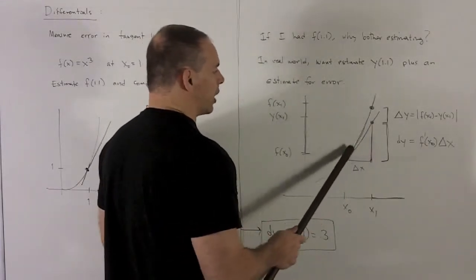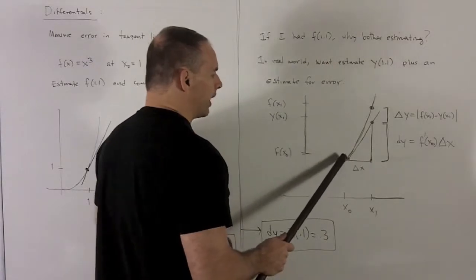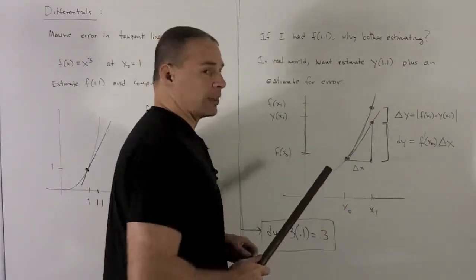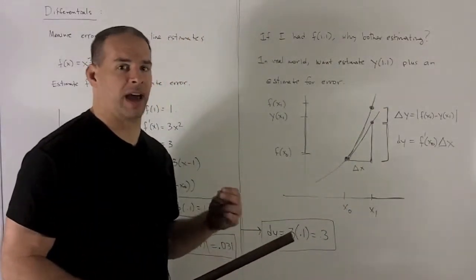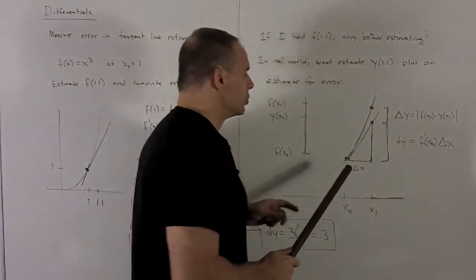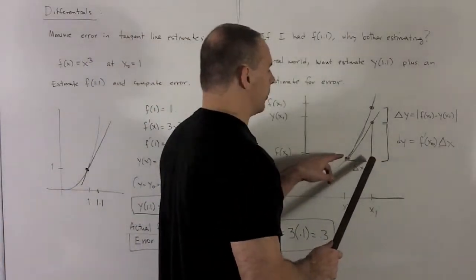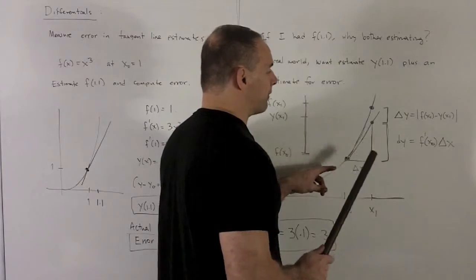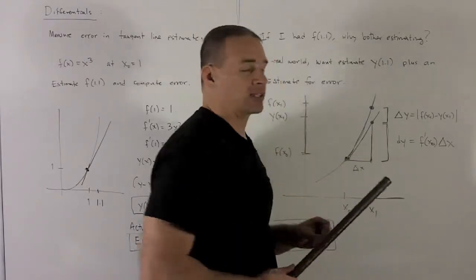Now notice the way I get this leg of the right triangle, well, we have the slope of this line. That's the slope of the tangent line, which is the derivative evaluated at x0. So if I go over by delta x, I'm going to go up by f'(x0) times delta x.